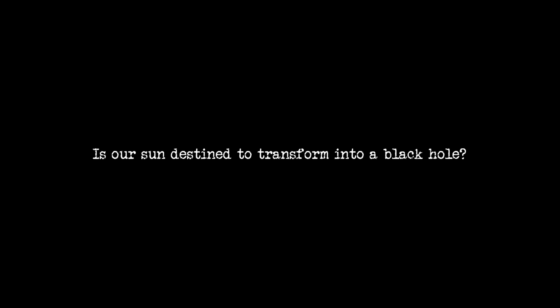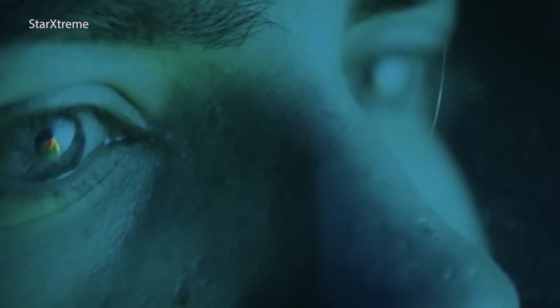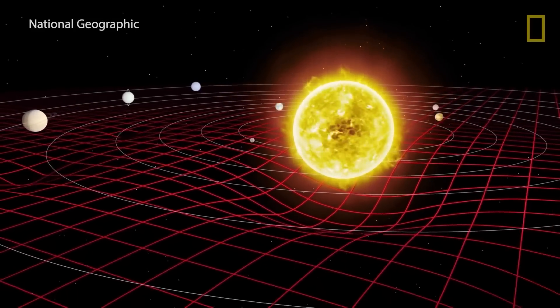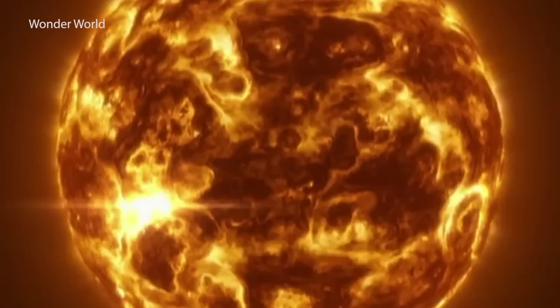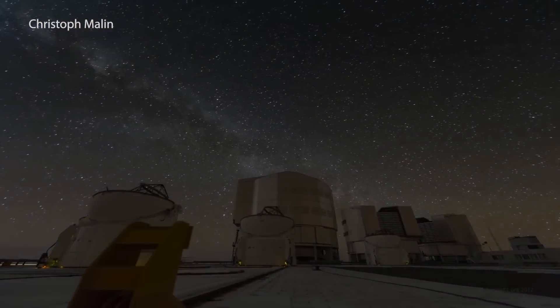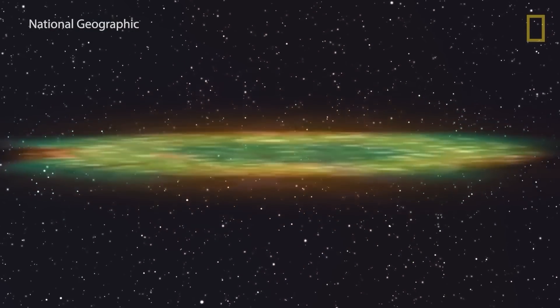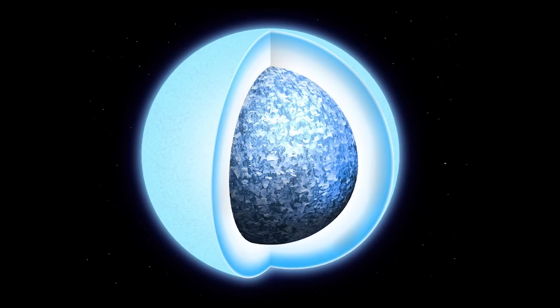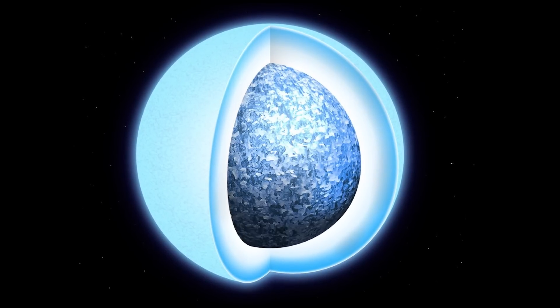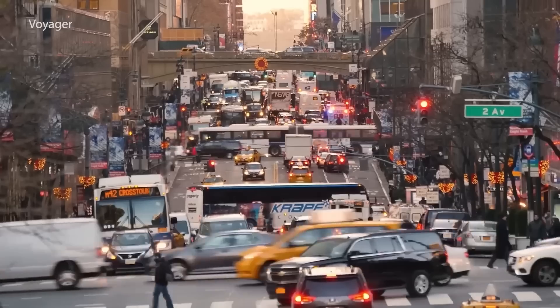Is our sun destined to transform into a black hole? Fortunately, the answer is no, thanks to a crucial limitation. The sun's mass is insufficient to collapse into a black hole, but this doesn't exempt it from an eventual demise. As it reaches the twilight of its existence in billions of years, the sun will evolve into a red giant star. Once it exhausts its remaining fuel, it will shed its outer layers and transform into a glowing gas ring known as a planetary nebula. Ultimately, all that will remain of the sun is a cooling white dwarf star. However, this fate is so far into the future that there is no cause for concern.